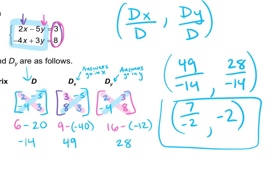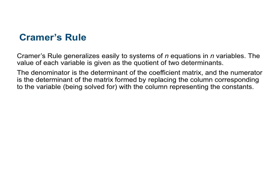Simplifying: 49 over negative 14 — what goes into both 49 and 14? 7. So it would be negative 7 over 2. And 28 over negative 14 — divide by 14 — gives us negative 2. So that's our answer. It's always going to be an ordered pair, with X before Y. We're also going to do this with three-variable systems — X, Y, Z. The next page just talks about Cramer's rule: the denominator is the determinant of the coefficient matrix and the numerator is the determinant of the matrix formed by replacing the column corresponding to the variable.